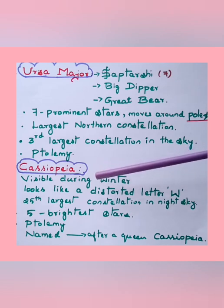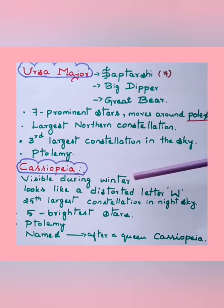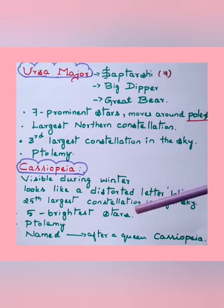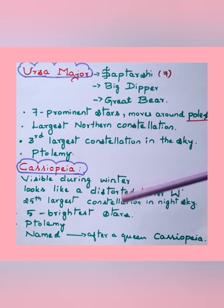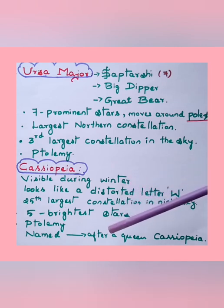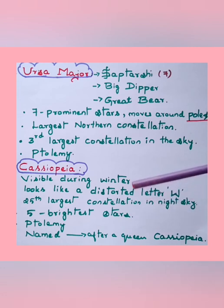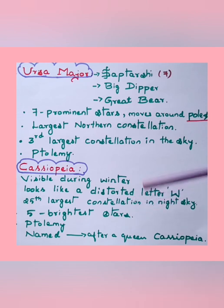Cassiopeia is visible during winter time and looks like a desaturated letter W. It is the 25th largest constellation in the night sky and has five brightest stars. It was also found by Ptolemy and is named after Queen Cassiopeia. The key points to remember are the five brightest stars and that it is named after a queen.